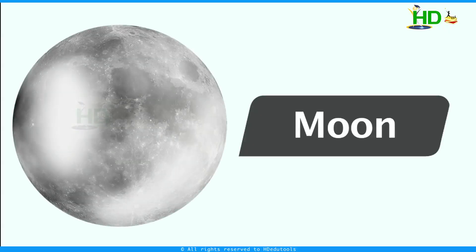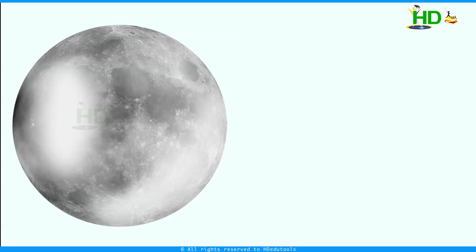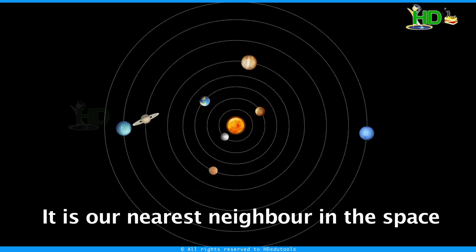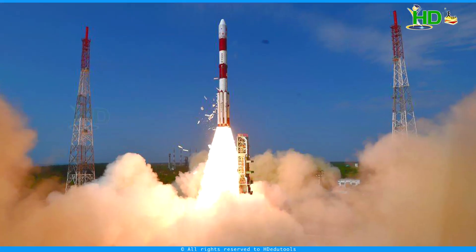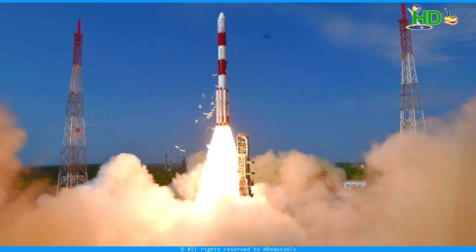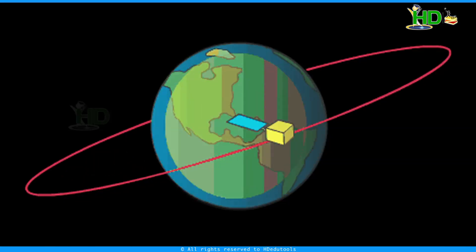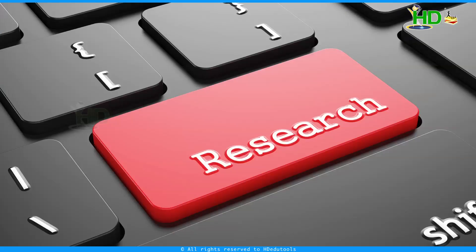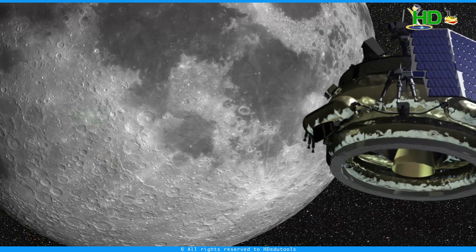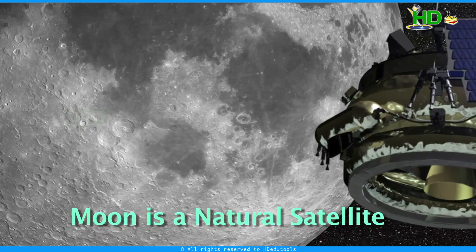Moon. This is the natural satellite of earth. It is our nearest neighbor in space. We have sent hundreds of artificial satellites to move around the earth for communication purposes and for research purposes. But the moon is a natural satellite.